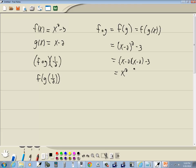Which gives us x squared minus 4x plus 4 minus 3, or x squared minus 4x plus 1.